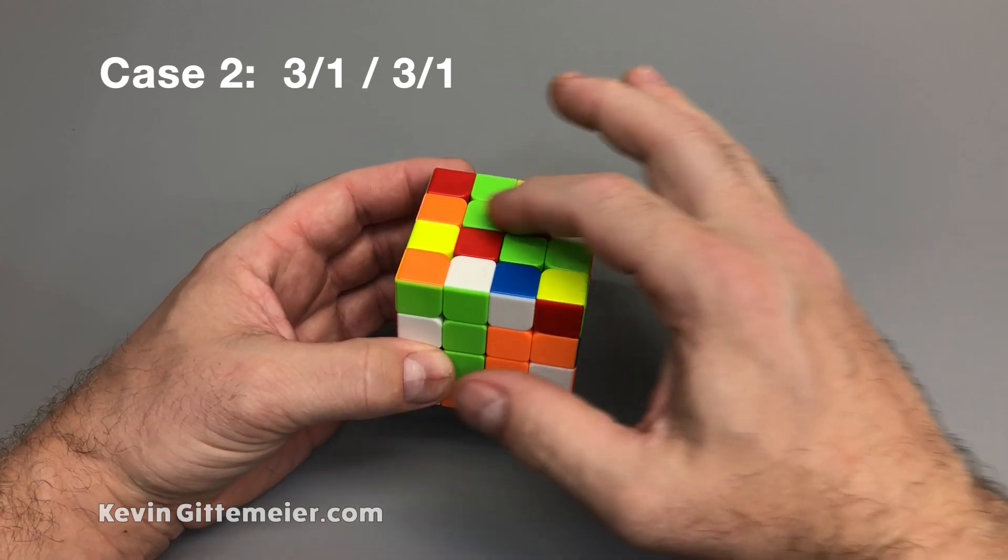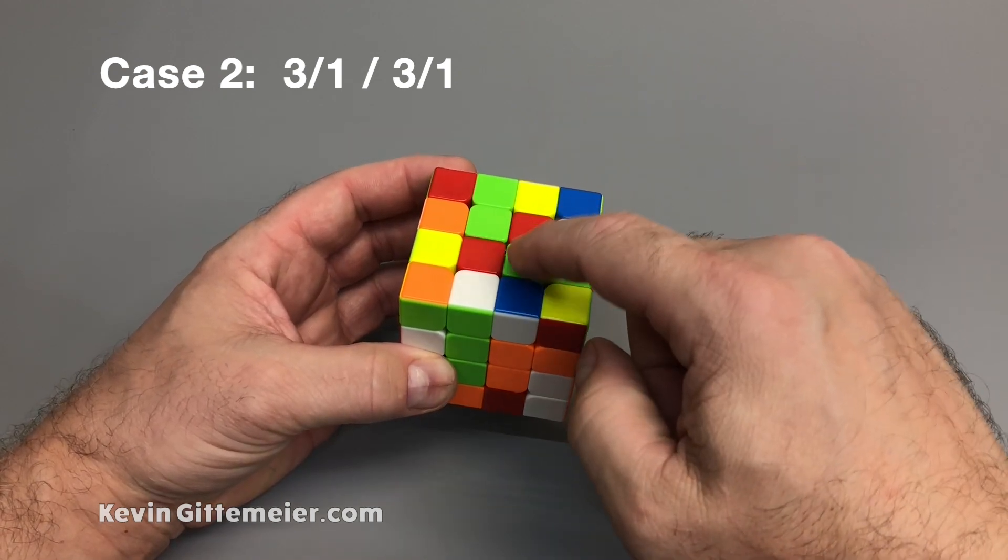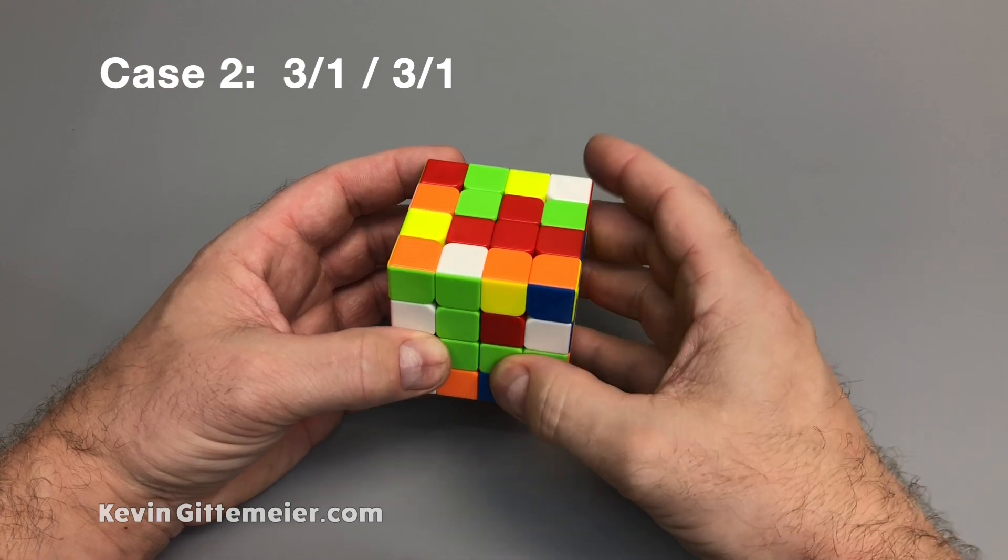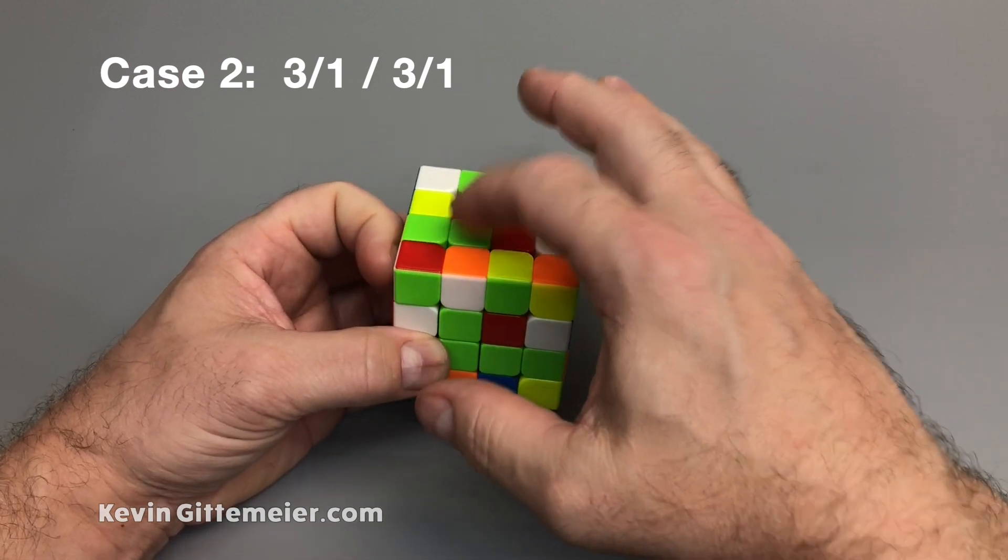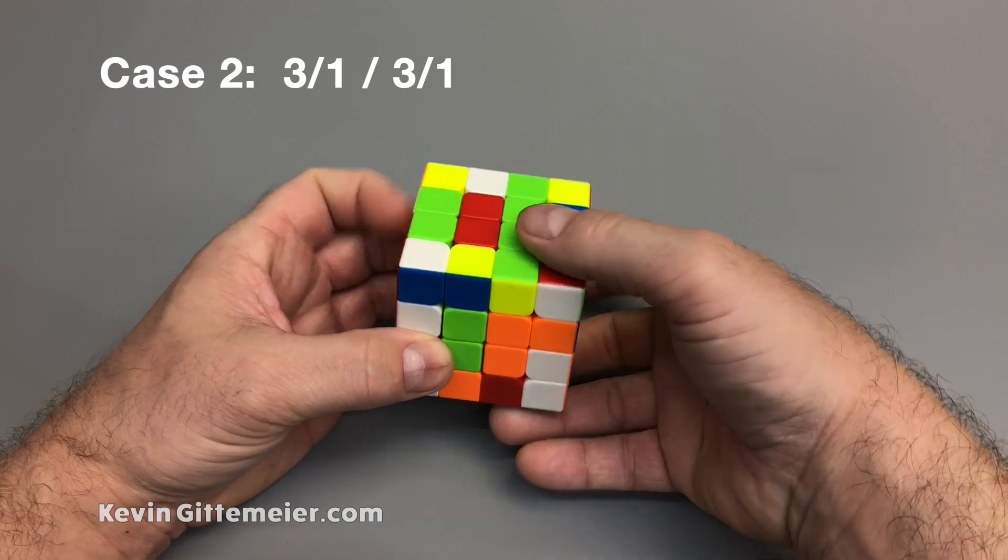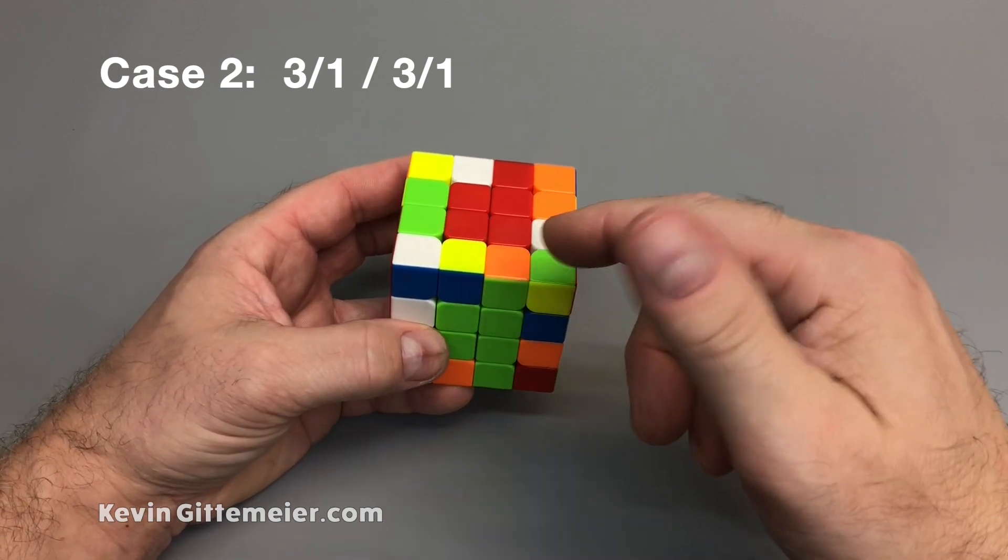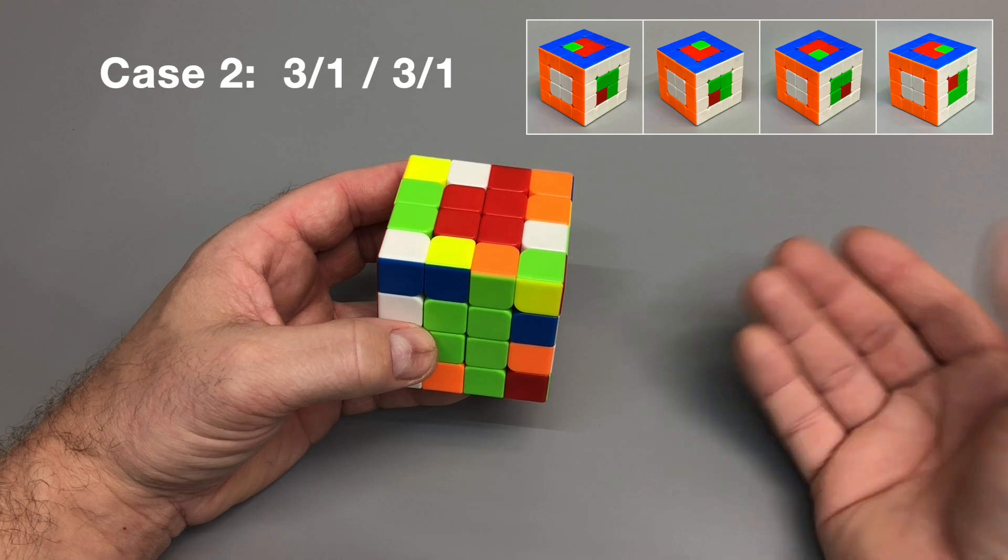If we don't match when we slice up, all we do is have to notice where this green is, and then just turn the top so that it will match when we slice up. That same principle holds true for any iteration there is.